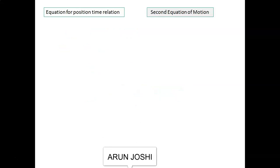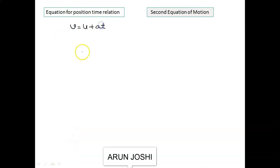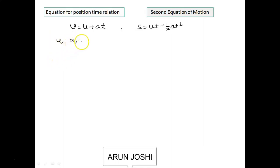Now we move to the second equation of motion: s = ut + ½at². Same situation — initial velocity u, constant acceleration a, after time t velocity becomes v. We first discuss the graphical method.